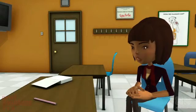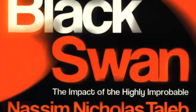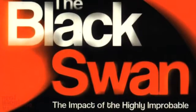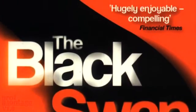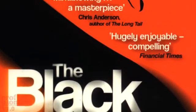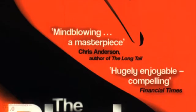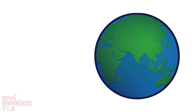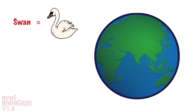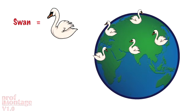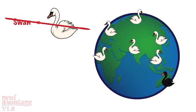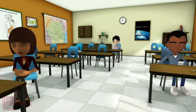In Nassim Taleb's book The Black Swan, he describes how the old world thought all swans were white until they came to Australia. Imagine the hypothesis: all swans are white. To prove it, you'd have to examine every swan on the planet. To disprove it, you can stop as soon as you spot a black swan.